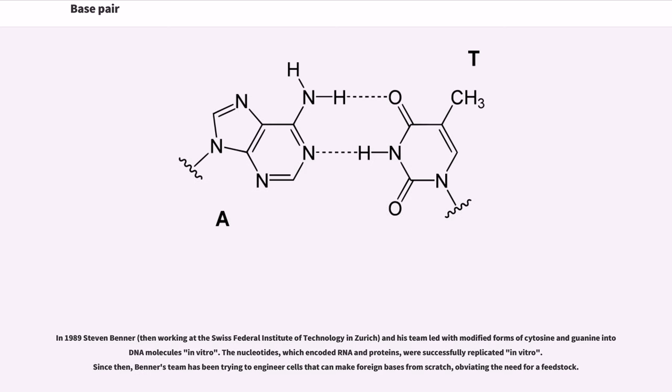In 1989, Steven Benner, then working at the Swiss Federal Institute of Technology in Zurich, and his team worked with modified forms of cytosine and guanine into molecules in vitro. The nucleotides, which encoded RNA and proteins, were successfully replicated in vitro. Since then, Benner's team has been trying to engineer cells that can make foreign bases from scratch, obviating the need for a feedstock.